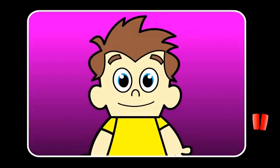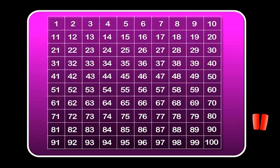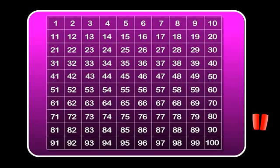What does it mean to put numbers in order? If you look at this number chart, all the numbers are in order from 1 to 100.